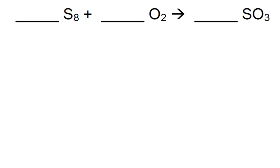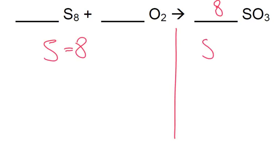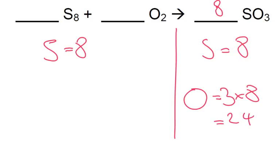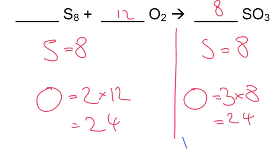Here we've got sulfur and oxygen going to make sulfur trioxide. We've only got one sulfur here but we've got eight on this side, so it might be a good idea to start off by putting an eight here. Sulfur — we've got eight on the left, we've now got eight on the right. The problem is how many oxygens have we got? Three times eight is 24. We need something times two to equal 24, so two times 12 — we put 12 there, that means we've got 24 on this side, and we are now balanced.